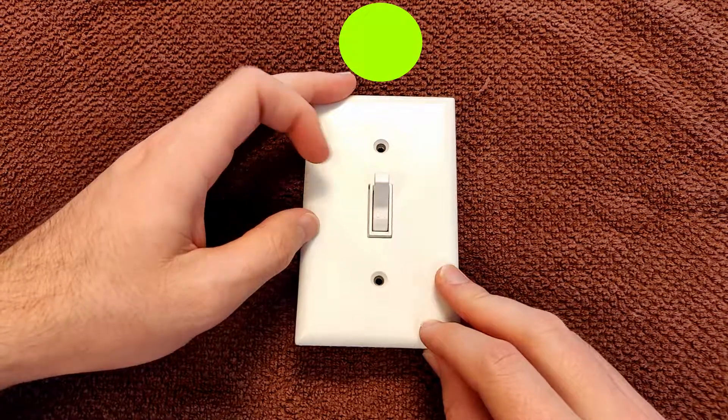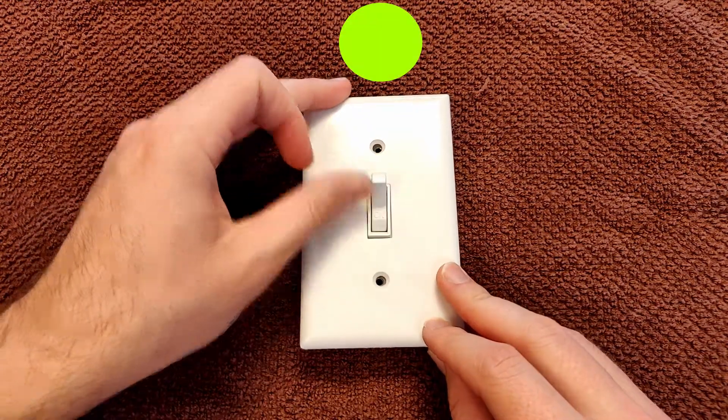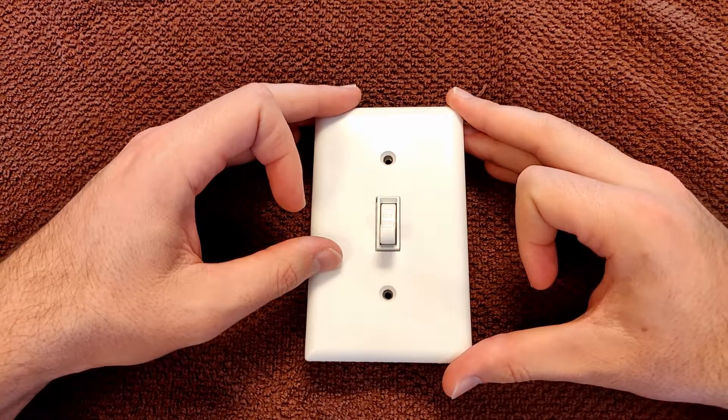You can tell a switch is a single-pole switch if only one switch turns a light on and off. A typical example would be a light above the kitchen sink.